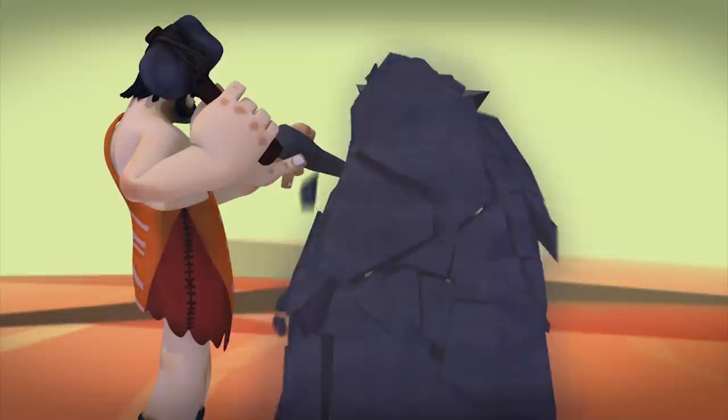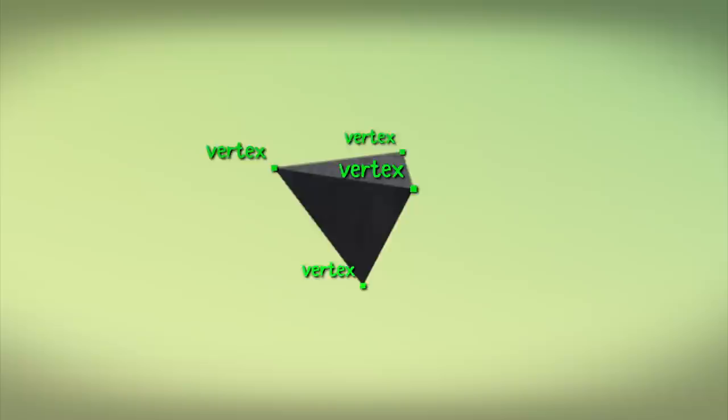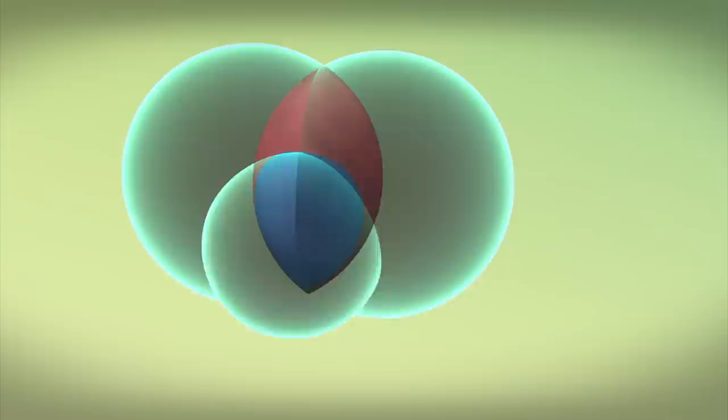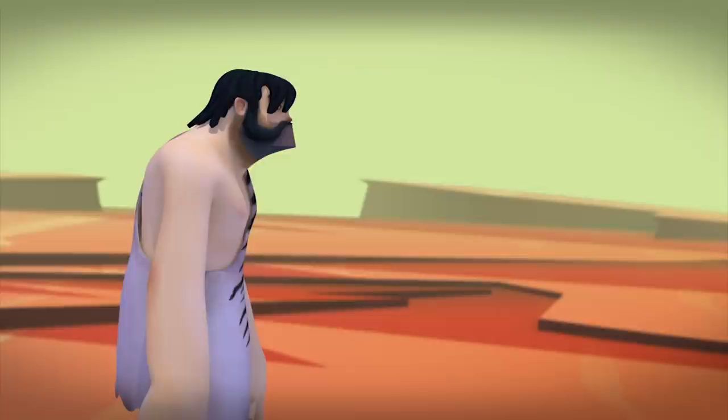In three dimensions, we can make surfaces of constant width, like the Reuleaux tetrahedron, formed by taking a tetrahedron, expanding a sphere from each vertex until it touches the opposite vertices, and throwing everything away except the region where they overlap.